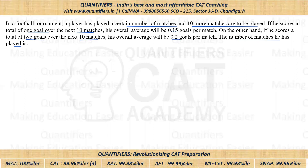Let's assume the number of matches which he has played till now is N. So the total number of matches, when he plays 10 more matches, would be N plus 10.